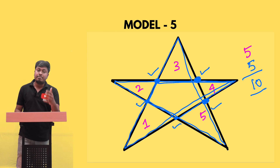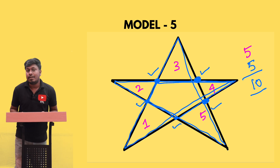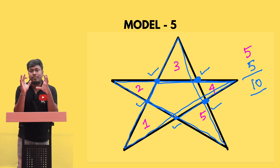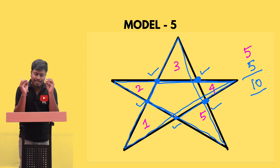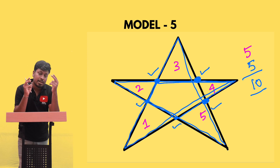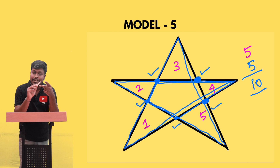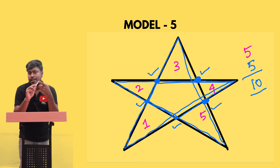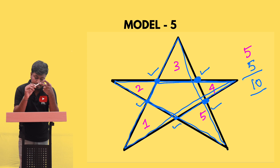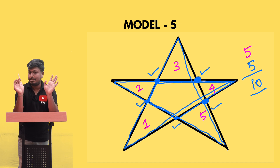So you get another five triangles from the five tip points, making the total ten. To summarize model number five: it is based on a star diagram with two types. Type one is a star formed from two overlapping triangles and has a total of eight triangles. Type two is the continuous-stroke star and has a total of ten triangles.